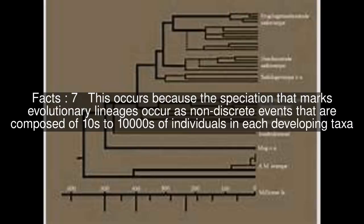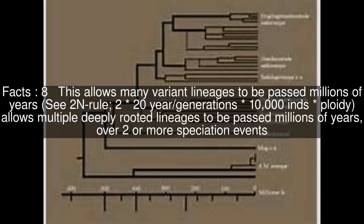This occurs because the speciation that marks evolutionary lineages occurs as non-discrete events that are composed of tens to tens of thousands of individuals in each developing taxa. This allows many variant lineages to be passed over millions of years — see the 2N rule: 2^20 years per generations times 10,000 individuals times ploidy.